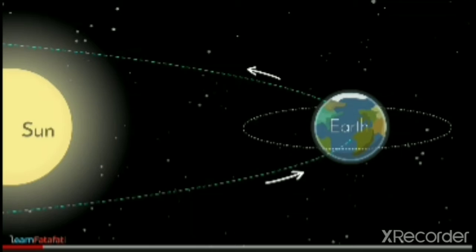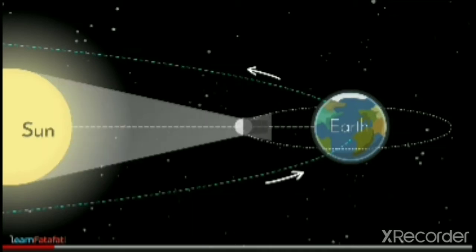Sometimes the sun, moon, and Earth come into one single straight line. In such a situation, an eclipse is formed.